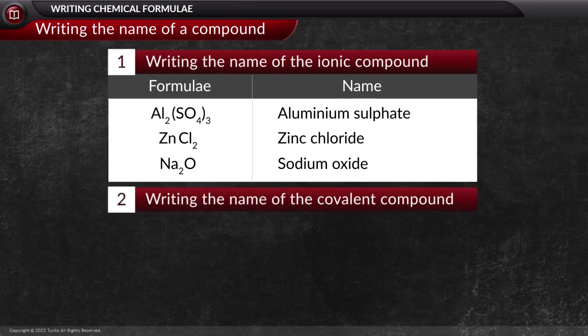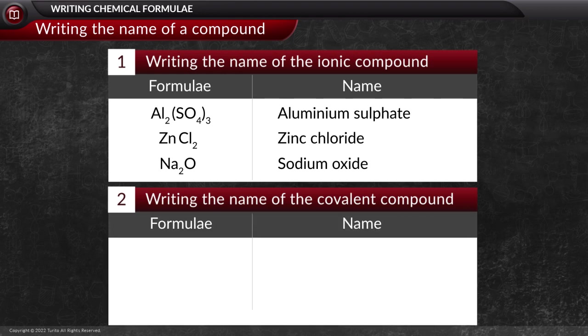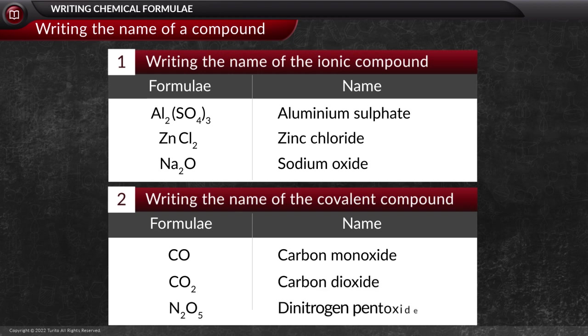Next is the naming of covalent compounds. For naming it, unlike ionic compound, the multiplicity of the participants is mentioned, like that in CO, which is carbon monoxide, and CO2, which is carbon dioxide. Similarly, for N2O5, it is dinitrogen pentoxide.